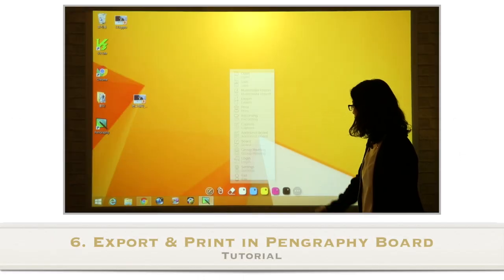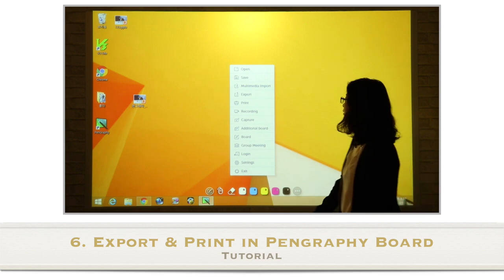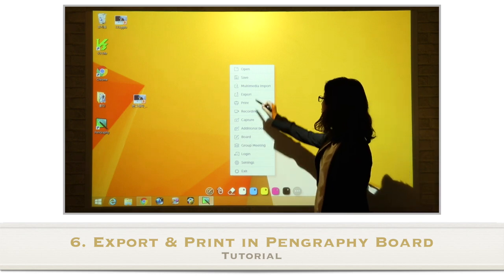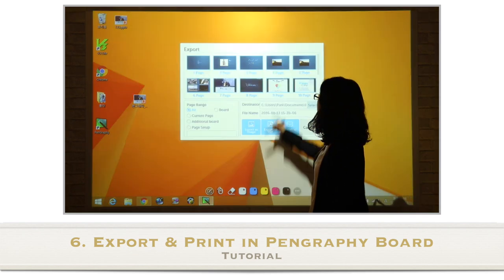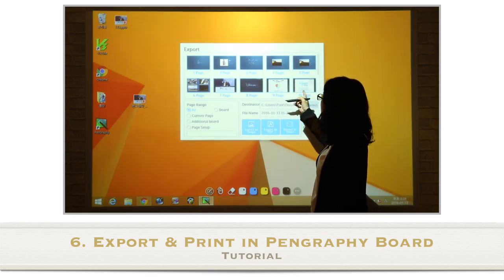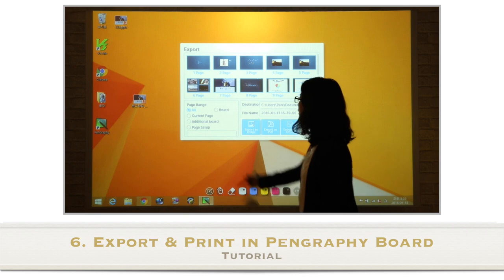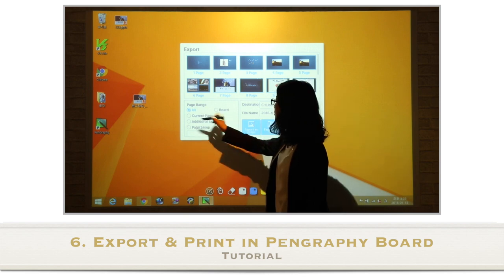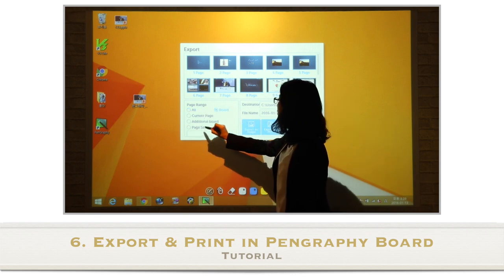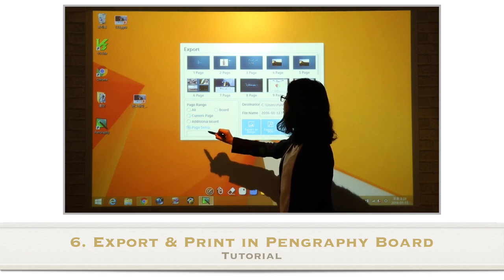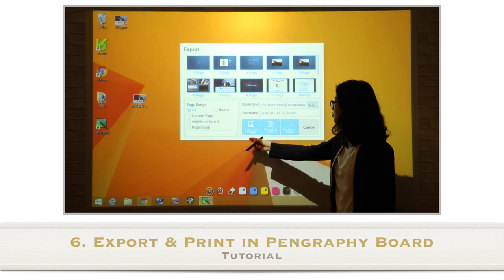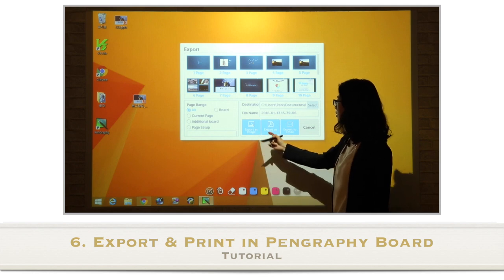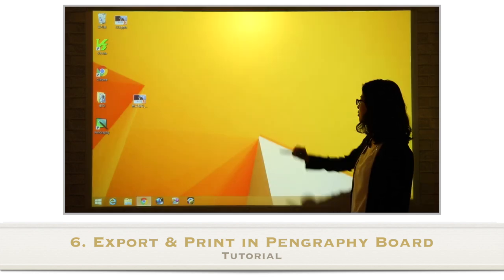Now let's learn how to export all the information we wrote down on the board. This information will be saved as pages. You can select a page range, like all pages, board, additional board, and page setup. You can export these pages into images or PDF format. Let's try exporting as PDF.